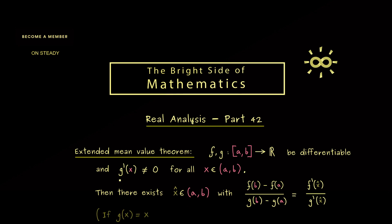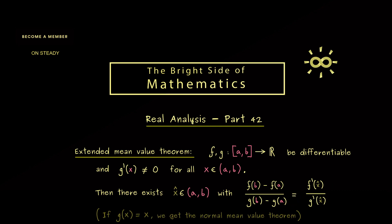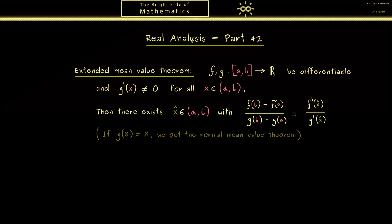More importantly, you should see that this actually extends the mean value theorem from the last video. You can simply choose g to be the identity, so the linear function x. We see this immediately because in this case the derivative would be the constant 1, and then indeed f'(x̂) is the normal mean slope.